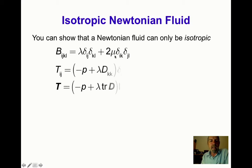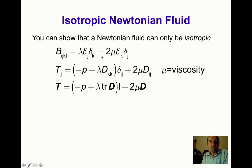Substituting this into our constitutive equation, we get T_ij equals minus P plus lambda times D_kk, all times delta_ij, plus 2 mu D_ij, where mu is called the viscosity. Or in direct notation: T equals (minus P plus lambda trace D) times I plus 2 mu times D.